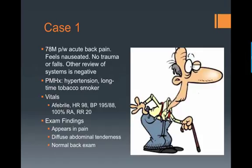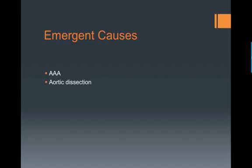His vitals are pertinent for a heart rate of 98 and blood pressure 195 over 88. On exam, he appears to be in pain with some diffuse abdominal tenderness but a normal back exam. Acute causes of back pain in older patients can include an AAA with rupture and/or an aortic dissection.